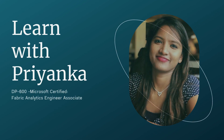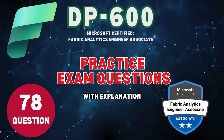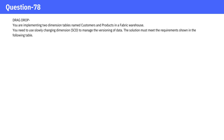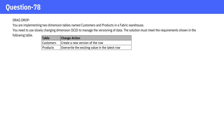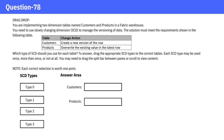Welcome to Learn with Priyanka. Question 78. You are implementing two-dimension tables named customers and products in a Fabric Warehouse. You need to use Slowly Changing Dimension, SCD, to manage the versioning of data. The solution must meet the requirements shown in the following table. Which type of SCD should you use for each table?